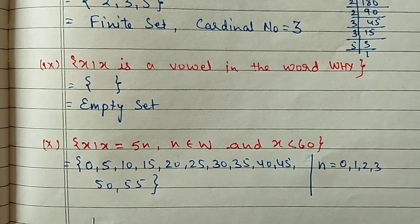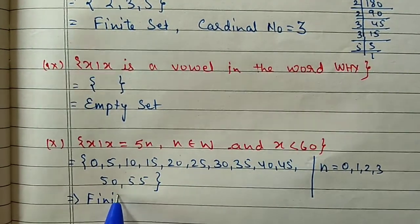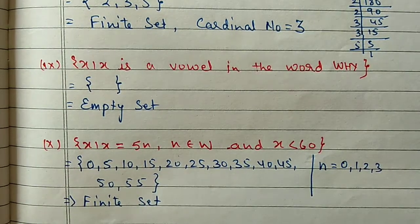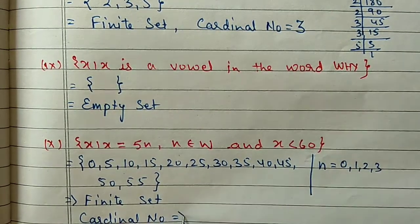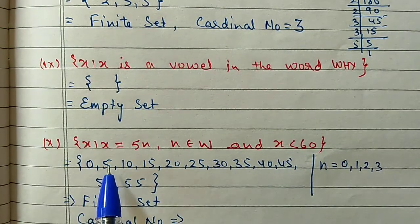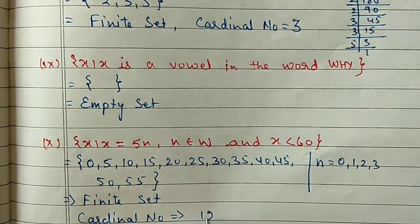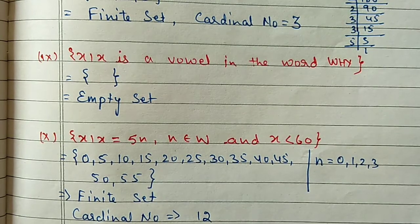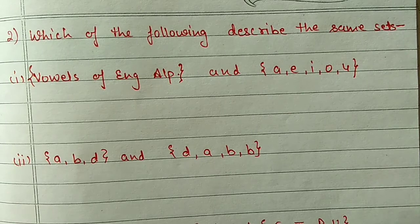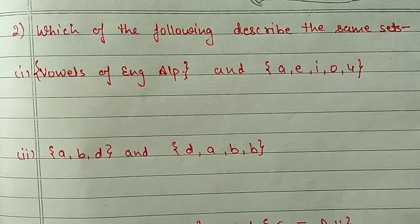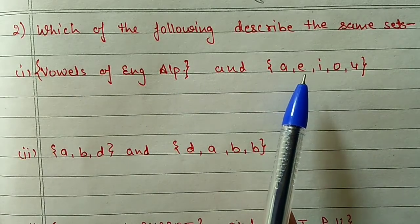Counting the elements: 0, 5, 10, 15, 20, 25, 30, 35, 40, 45, 50, 55 - that gives us 12 elements. The cardinal number is 12. Now Question 2 is given: one set is in description form and the other is in tabular form, so we will convert to the same form and check if both are the same.